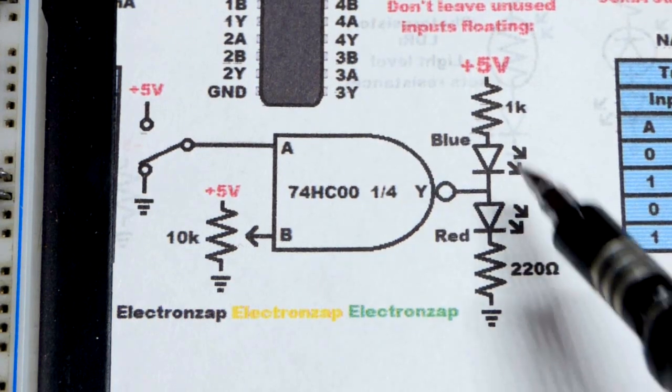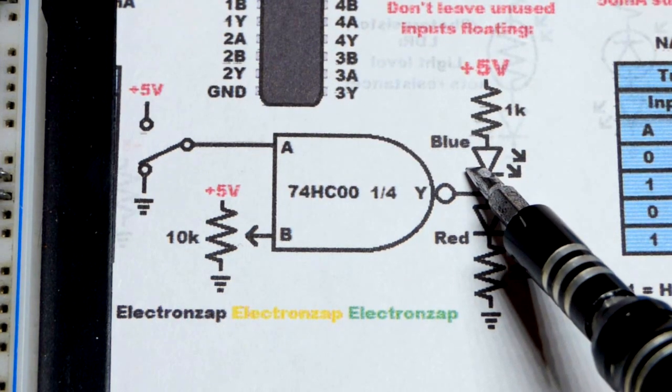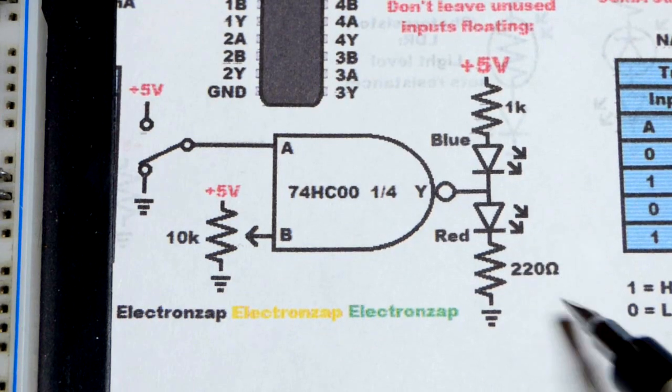The red LED will light up. I have a one kilo ohm resistor protecting the blue LED because it's naturally brighter than the red LED. So we're going to put less current through it. Red LED, 220 ohm resistor.